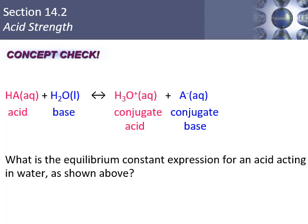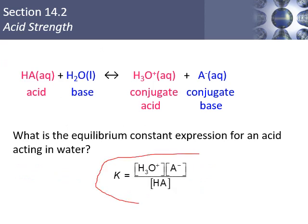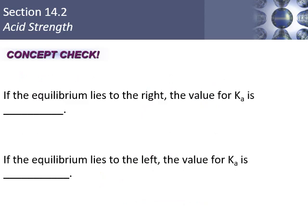The equilibrium constant expression for water's autodissociation is just the concentration of H3O+ times the concentration of OH− — we leave out the water. And Ka is H3O+ concentration times A− concentration divided by HA concentration. Concept check: if the equilibrium lies to the right, K is greater than one; if the equilibrium lies to the left, K is less than one.